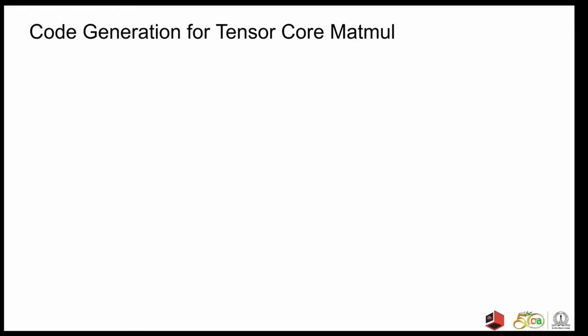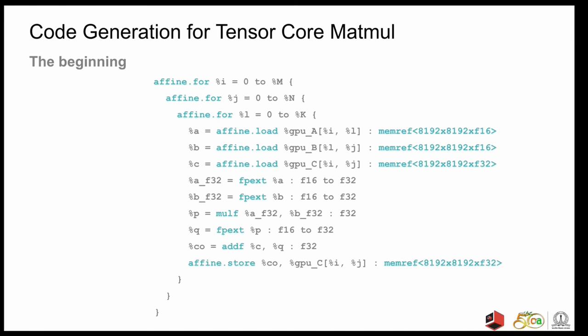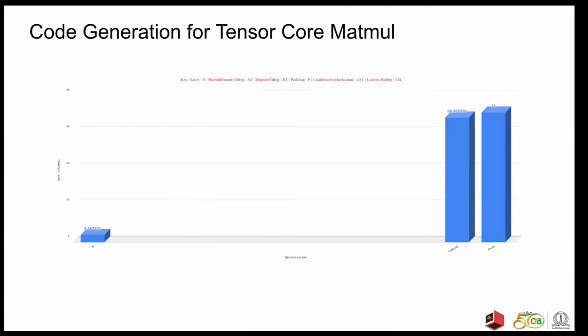So, now that we have seen the sequence of passes in the pipeline, we'll now see a running example and see the performance impact of the discussed optimizations. The IR that you see here is a naive three-loop implementation of MatMul. So, when lowered through MLIR and executed on the tensor cores, we get 3.9 teraflops of performance out of this example. This is a square example of 8192 by 8192 by 8192 with mixed precision accumulation and is run on the Ampere RTX 3090. The machine peak here is 71 teraflops and cuBLAS for the same problem size gives us 68.2 teraflops.